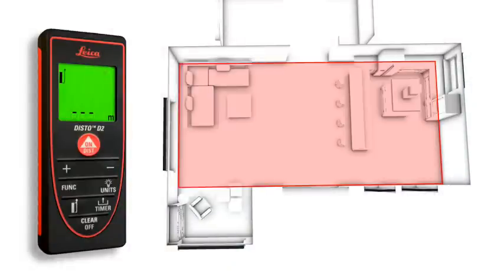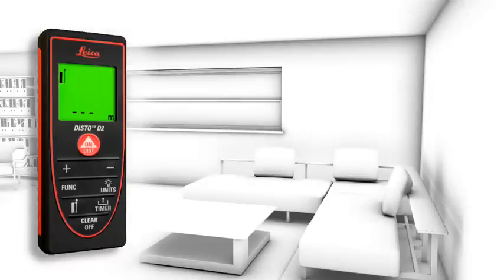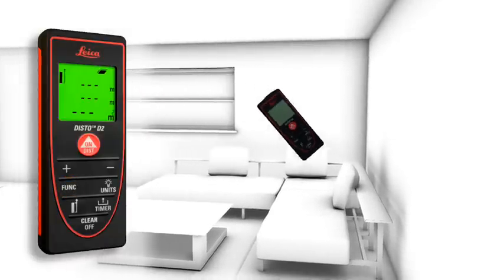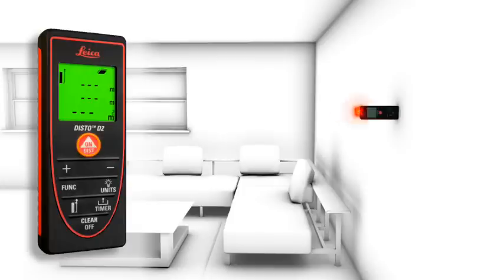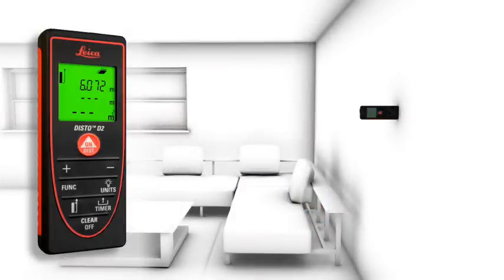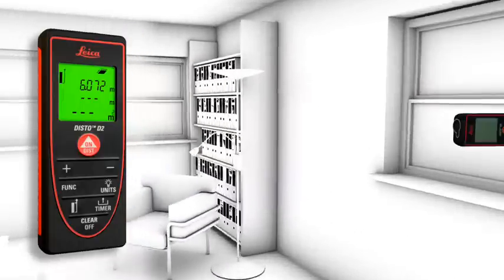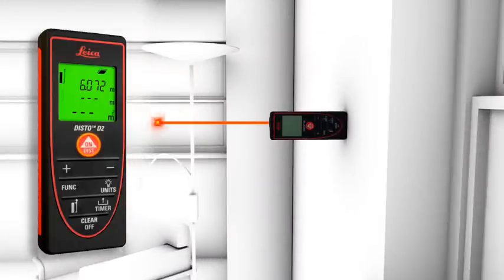Distances and areas can be easily added or subtracted at the touch of a button. This is very useful, for example, if the area of a room should be measured which goes around a corner, or if the total area of different rooms has to be identified.